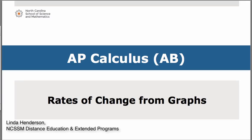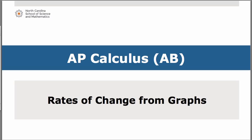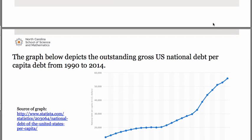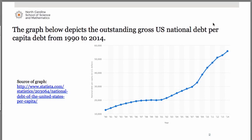Hi everyone. We're going to talk now of rates of change as determined from graphs. This part is great because we get to really look at some very real life applications. The graph you see here depicts the outstanding gross national debt per capita in the United States from 1990 through 2014.